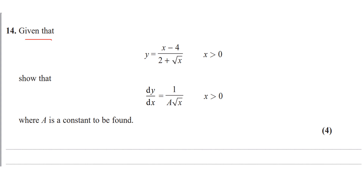So question 14: given that y is equal to x minus 4, all over 2 plus root x, where x is greater than 0, show that dy/dx is 1 over a root x, where x is bigger than 0 and a is a constant to be found.